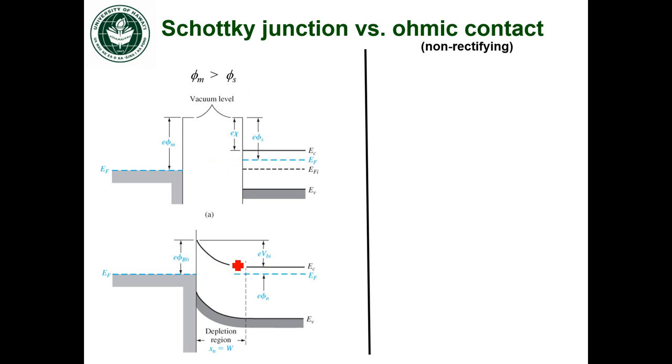We had electrons flowing from the semiconductor into the metal, and that causes that depletion region to form and the conduction valence band to bend upwards.